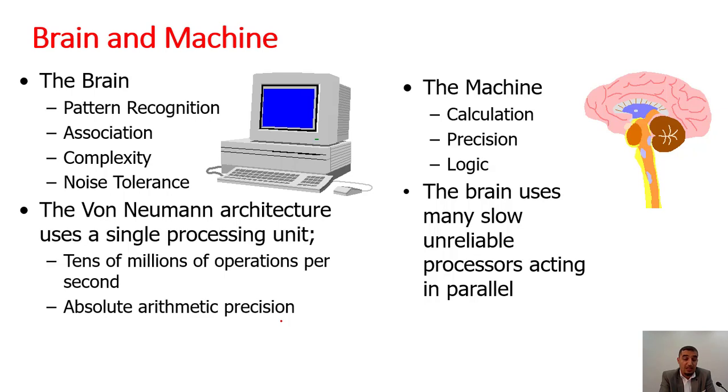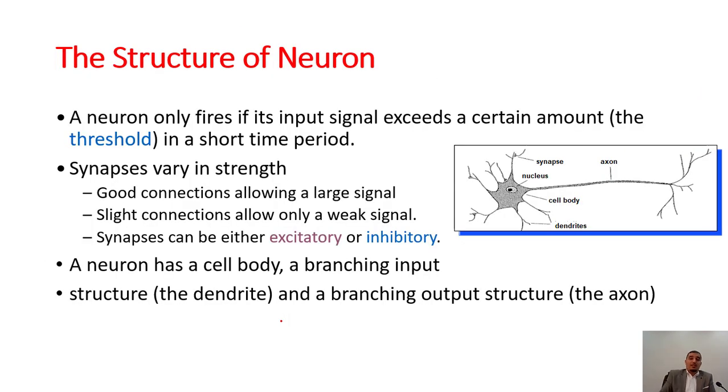The idea came from a neuron. The neuron only fires if its signals exceed a certain threshold for a short period, just like flashing lights. The synapses have varying strength - good connections allow large signals, slight connections allow only weak signals, and synapses can be either excitatory or inhibitory. A neuron has a cell body, branching input structures called dendrites, and branching output structures called an axon.